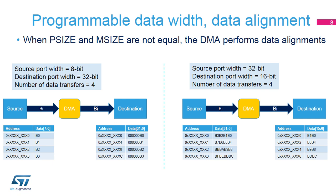The DMA controller does not pack or unpack data. When the source port is narrower than the destination port, data are aligned in the destination memory based on the destination port width. In the example on the left, the alignment is 32 bits, so each byte received from the source device is aligned on a 32-bit word address.